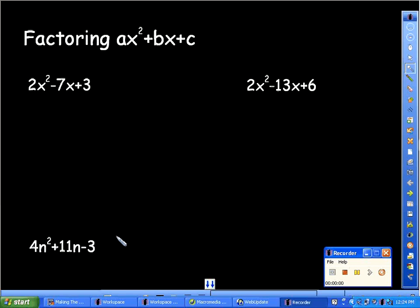Okay, today we're going to be talking about factoring polynomials in the form ax squared plus bx plus c. There's a number in front of our x squared term. You can see in this case, our first example is 2x squared minus 7x plus 3.